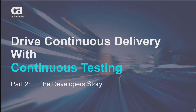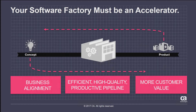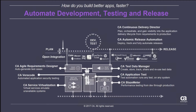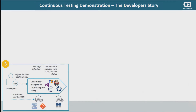Hello and welcome to part two of our journey through the CA continuous testing story. With the modern software factory it's all about getting your ideas and concepts through your release pipeline to a product that delivers value to your customers. In the first video we talked about project portfolio management, Agile Central and Agile Requirement Designer. Today we're going to focus on how the CA toolset can help a developer in his day-to-day life, and we're going to do that through a demonstration.